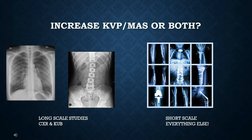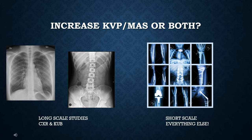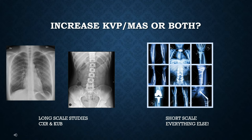The key question: do you increase KVP, increase mAs, or both? The only long-scale studies we have are chest X-rays and abdomens — everything else is short scale. For long-scale studies where the index is a little low, it's wise to go up in KVP since you can increase KVP and remain long scale. However, most techs bump up the mAs a step or two, because increasing mAs by a little raises the index accordingly, while increasing KVP by 15% can double the index number.